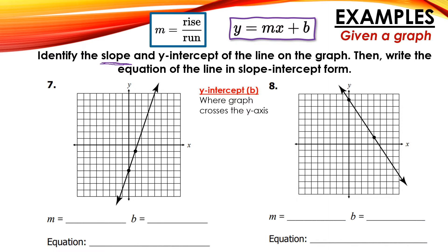Basically, we use the formula rise over run. Rise is your change in the y value — the vertical change, up and down — and run is the change in the x value, the horizontal change, left and right. For graph number 7, I want to start at the point closest to the left. I'll count up to get my rise: 1, 2, 3 — so my rise is 3. I go over 1 place, so my run is 1. My slope is 3 over 1, which reduces to 3.